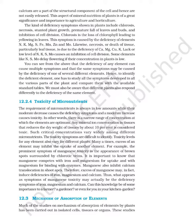For example, the prominent symptom of manganese toxicity is the appearance of brown spots surrounded by chlorotic veins. It is important to know that manganese competes with iron and magnesium for uptake, and with magnesium for binding with enzymes. Manganese also inhibits calcium translocation in shoot apex. Therefore, excess of manganese may induce deficiencies of iron, magnesium, and calcium.